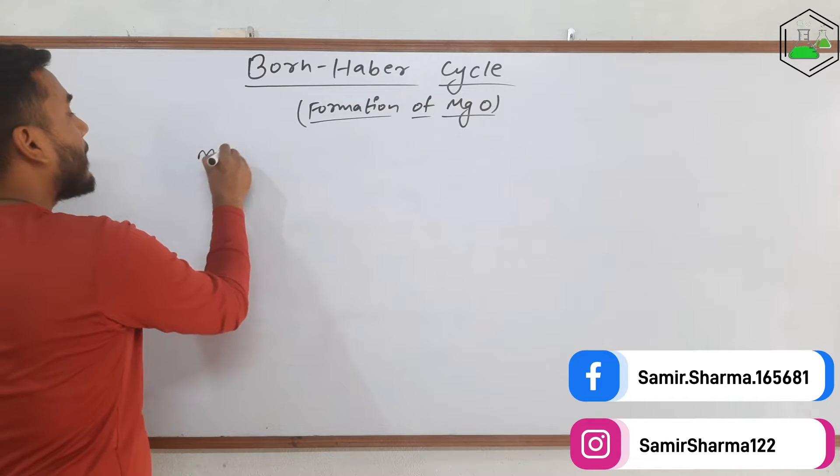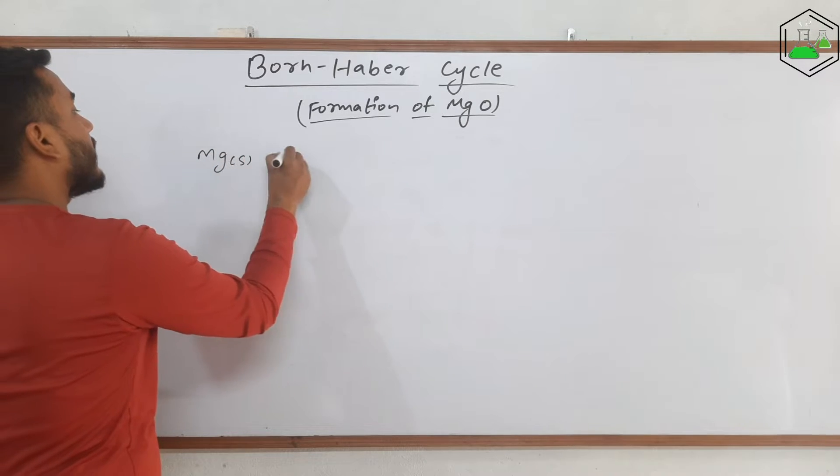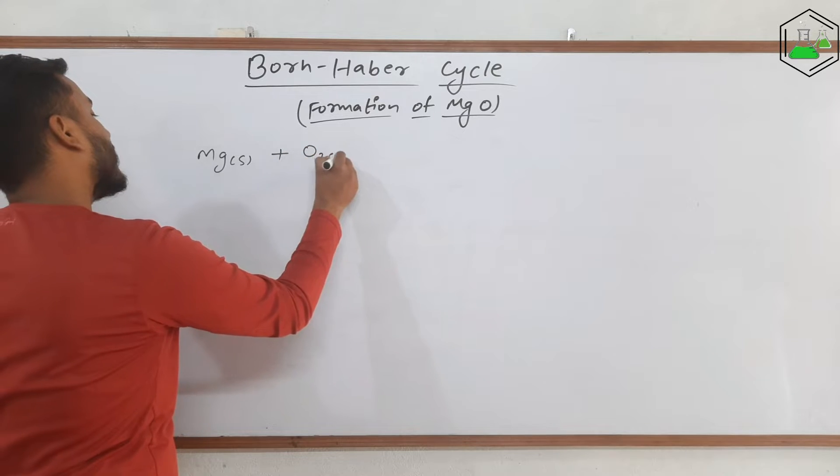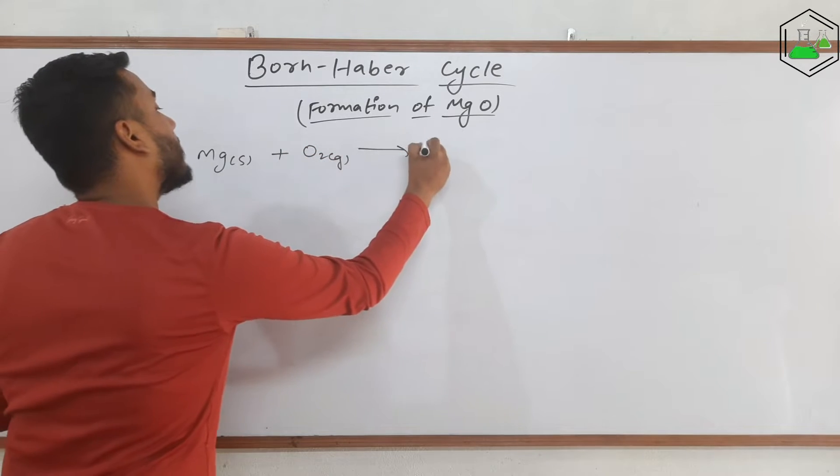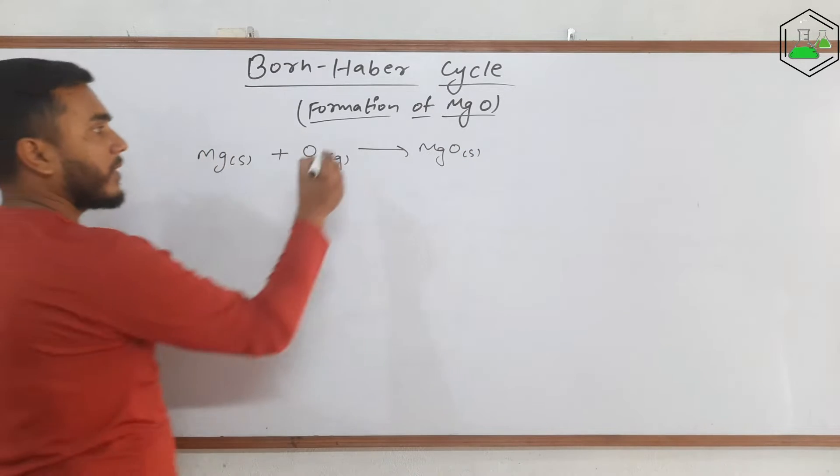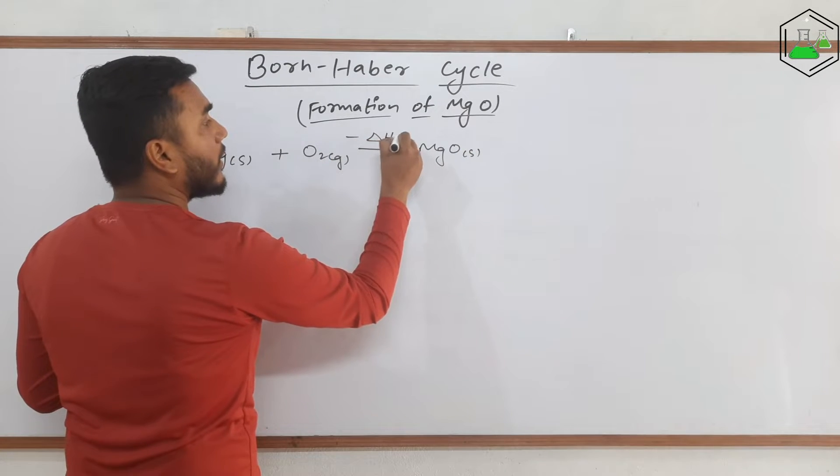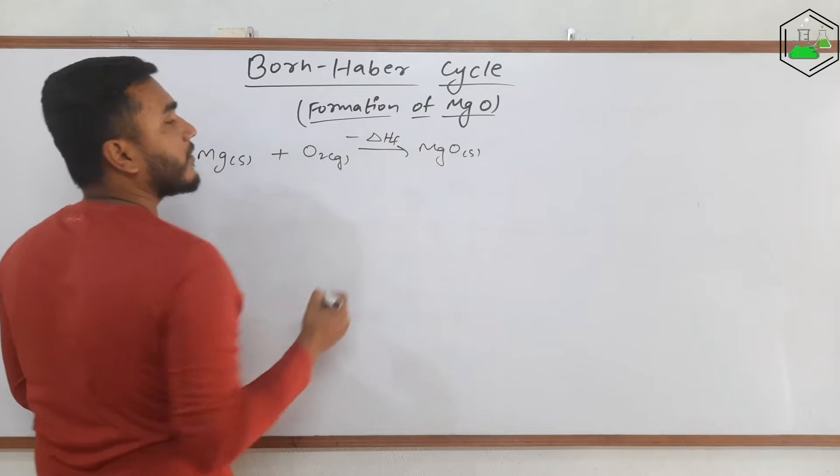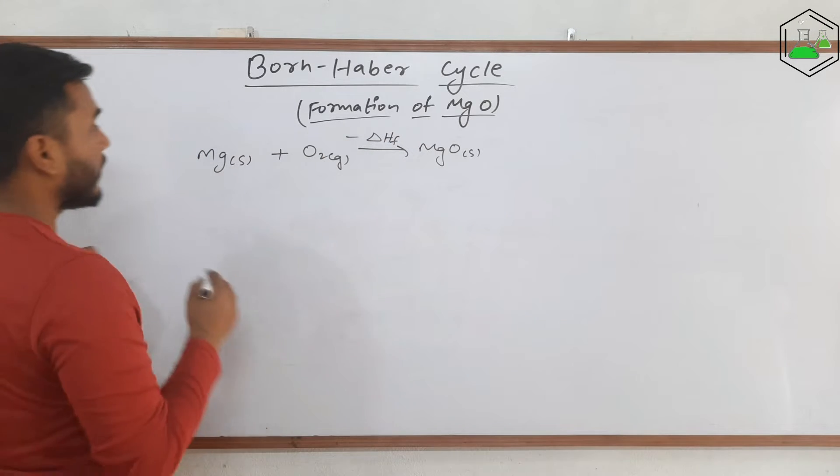So let's see the reaction. Magnesium in solid state reacts with oxygen in gaseous state to form magnesium oxide. This is in solid state as well. Now some energy is released that is called enthalpy of formation. As the energy is being released, we are putting a minus sign over here.